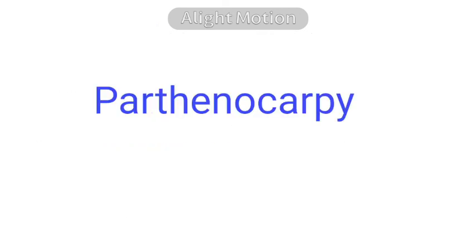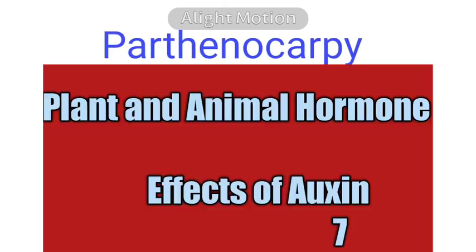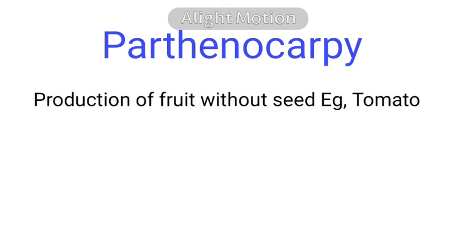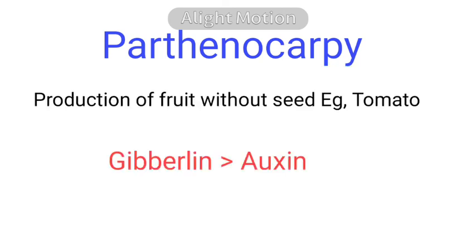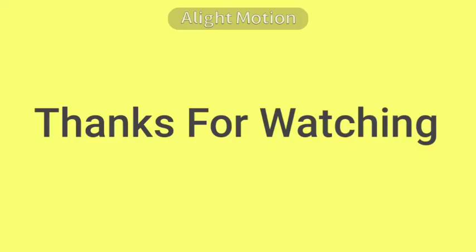The last effect is producing parthenocarpic fruits. We have already discussed this in the context of physiological effects of auxin, but comparatively, gibberellin is more efficient. An example is the tomato.